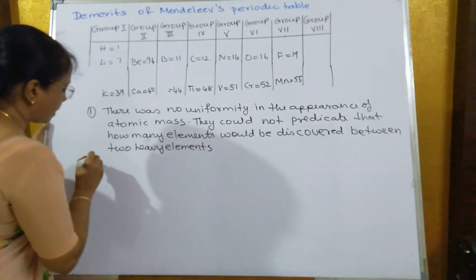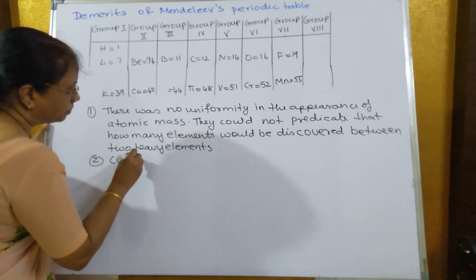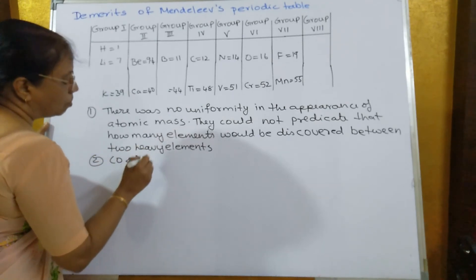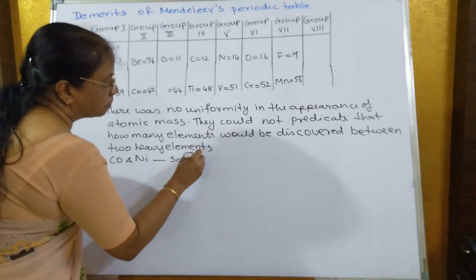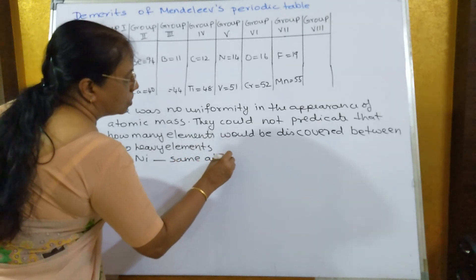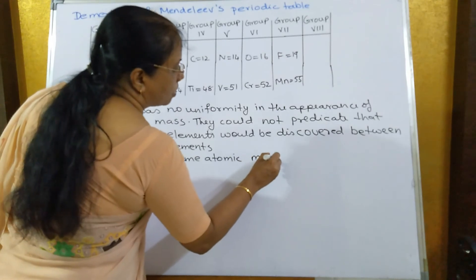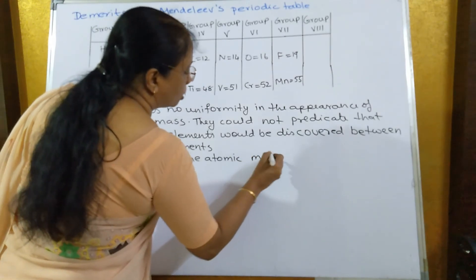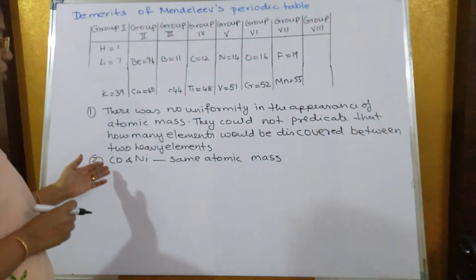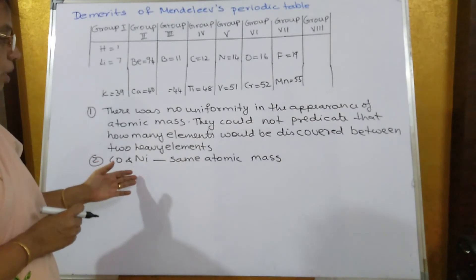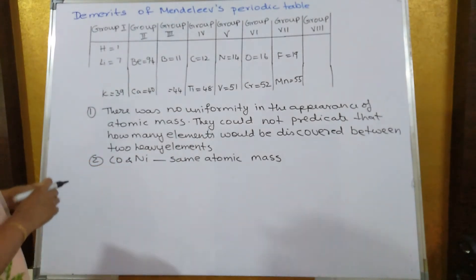The second demerit was the case of cobalt and nickel, which both had the same atomic mass. This created confusion about whether to place cobalt before nickel or nickel before cobalt.